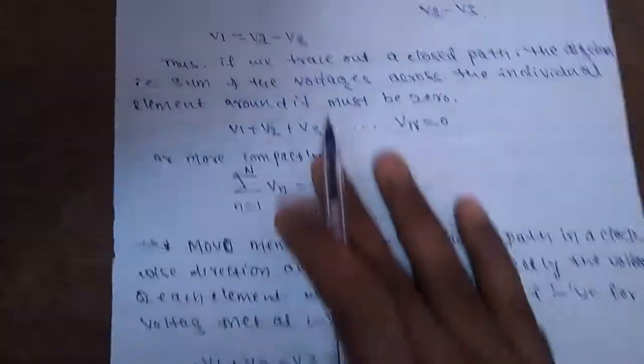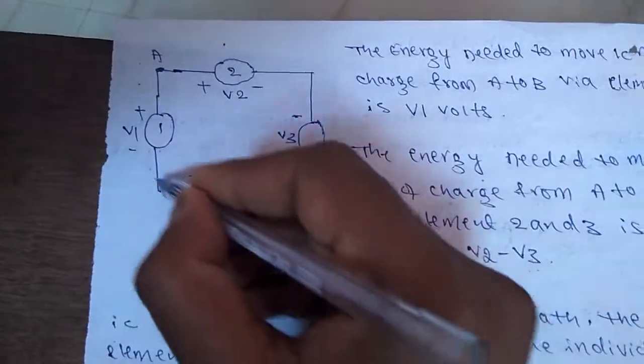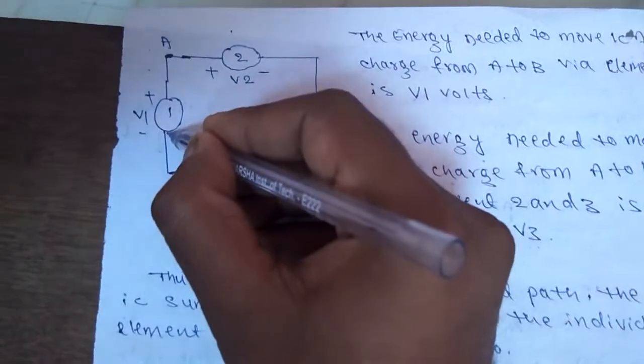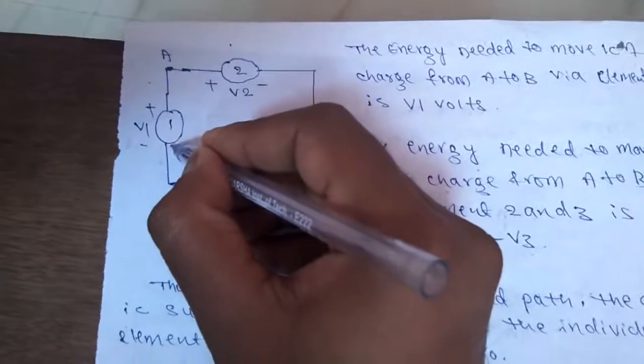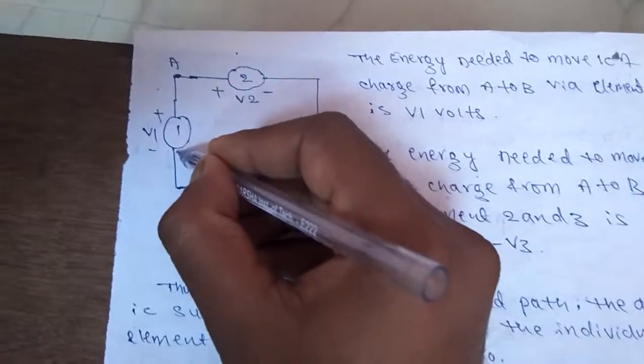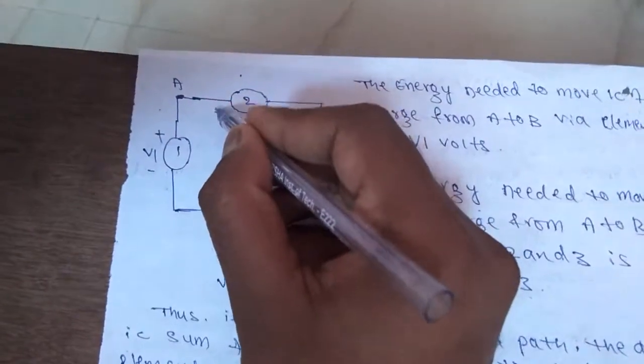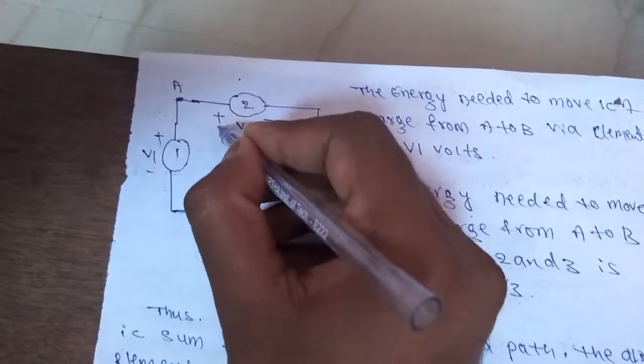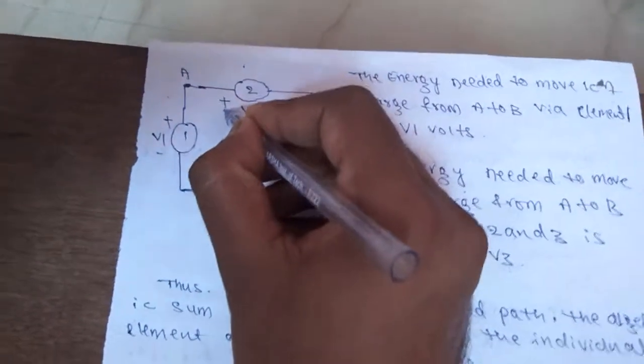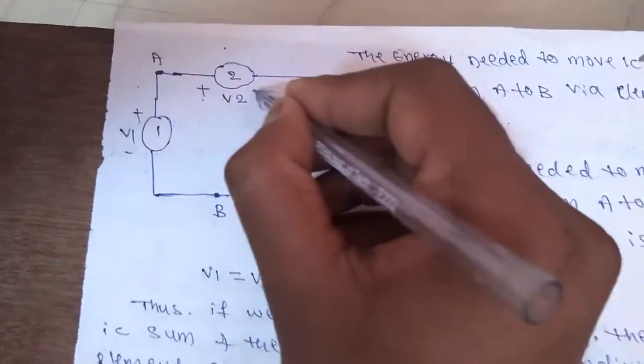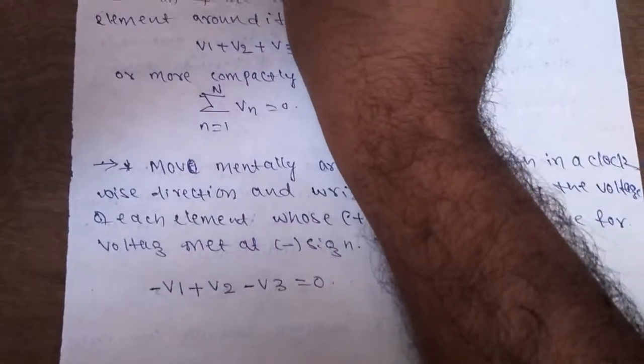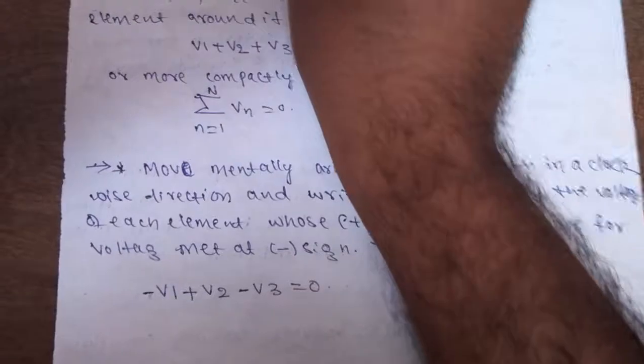So that if I am moving from point B, I reach minus terminal first. So I return it as a minus V1. And then I further move. Here I got first terminal as a positive. So that I return it as a plus V2. And further I am going to move to V3. So that I am going to write it as a minus V3. Because I entered the minus terminal.